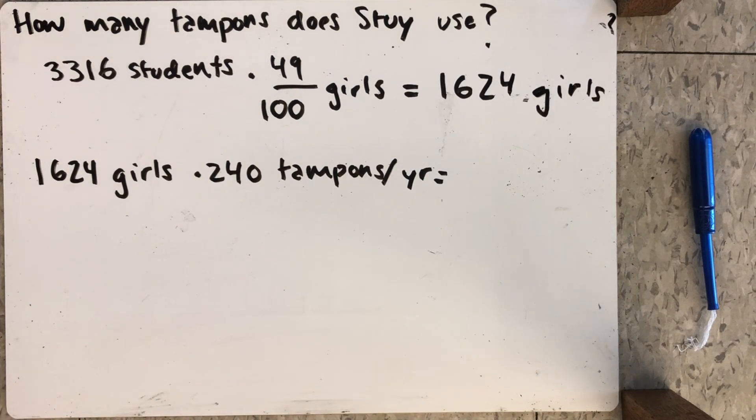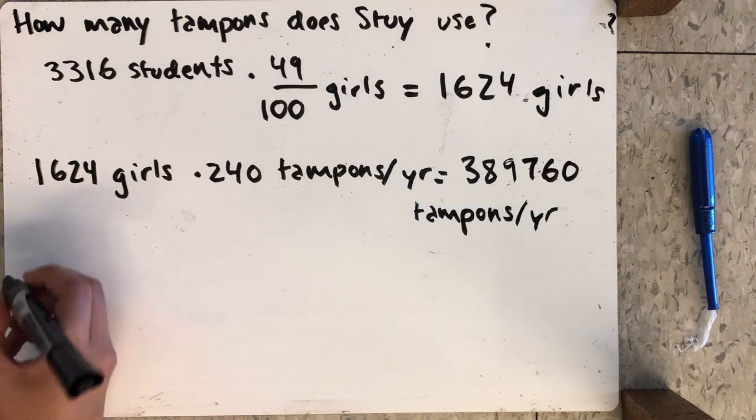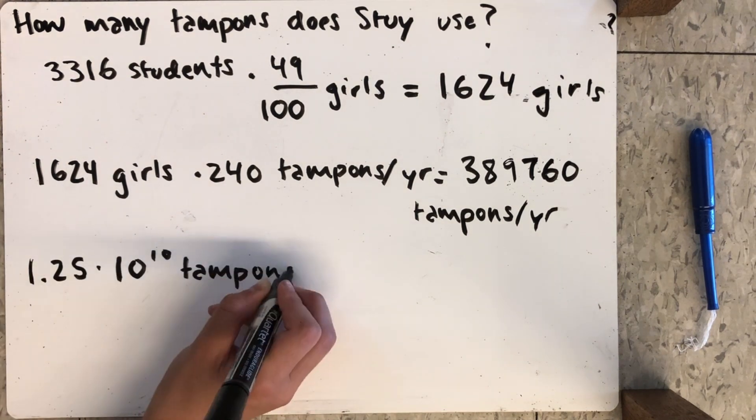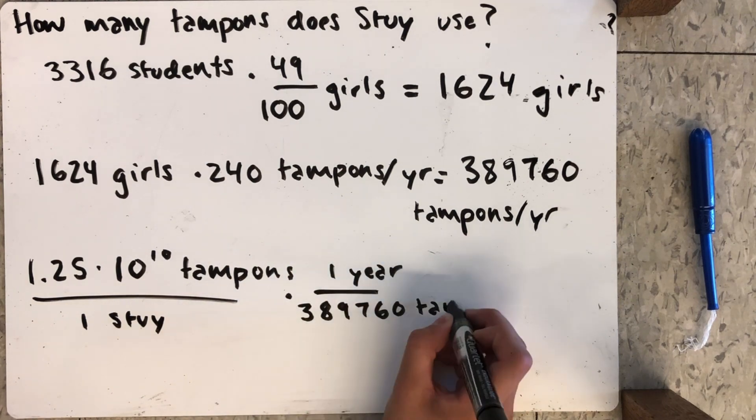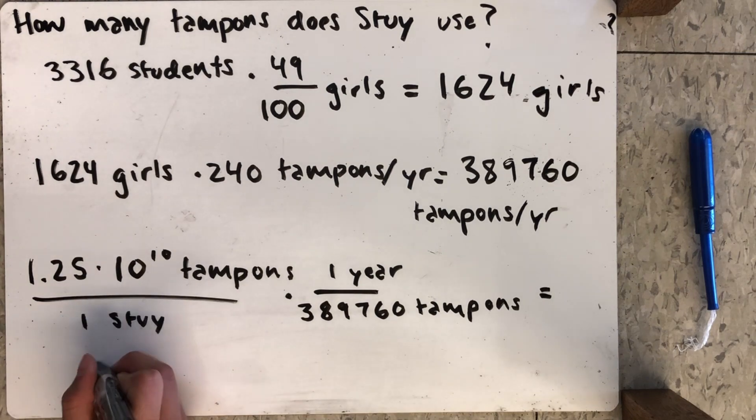1,624 girls times 240 tampons per year, which again is the rate women use tampons, is 389,760 tampons per year. Using the same proportion as we did to find out how many years it would take American women to fill the school, Stuy, we found that it took 32,071 years for all the women at Stuyvesant to fill up the school.